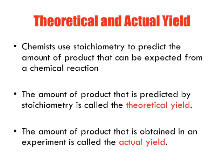Chemists use stoichiometry to predict the amount of product that can be expected from a chemical reaction. The amount of product that is predicted by stoichiometry is called the theoretical yield. So whenever you do a calculation, when we go through,